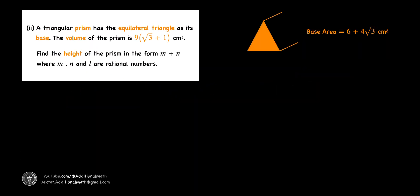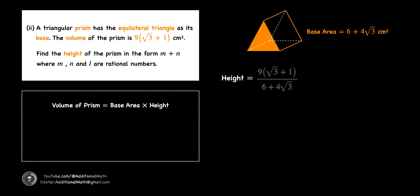With the base area found earlier, we can find the volume of the prism by taking the base area and multiplying by the height. To find the height of the prism, we take the volume 9(√3 + 1) and divide it by the base area 6 + 4√3.